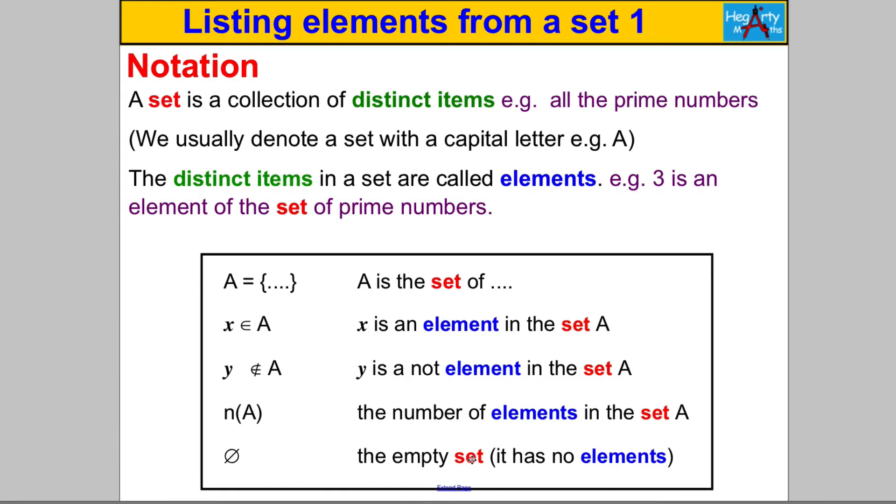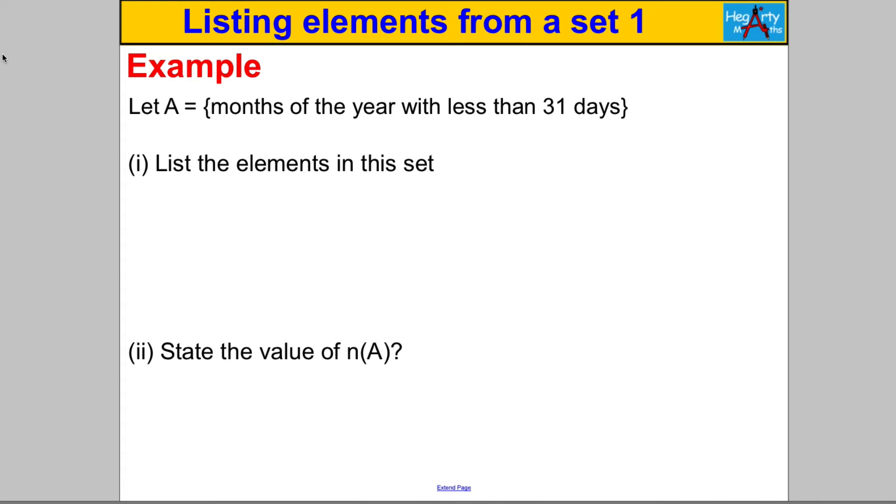So you will encounter some scenarios where you've got a set and there's nothing in it. Let's get on and try and make some sense of this with examples where everything will become clearer. First example here, you may want to pause the video and have a go. What does this mean? This means let A be the set of months of the year with less than 31 days in it. So what are those?